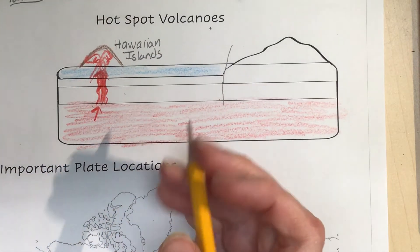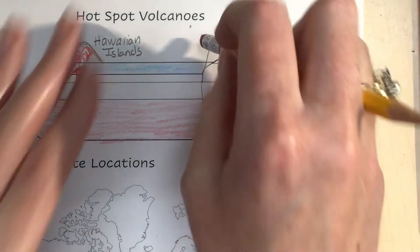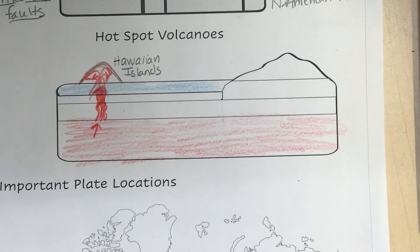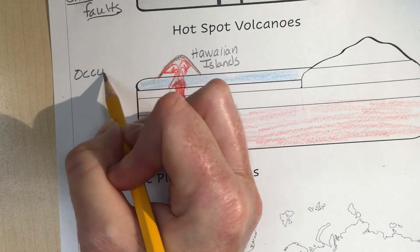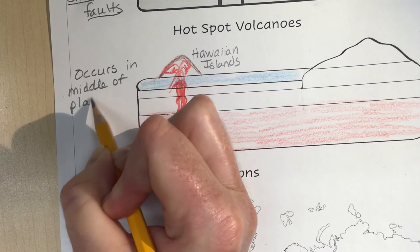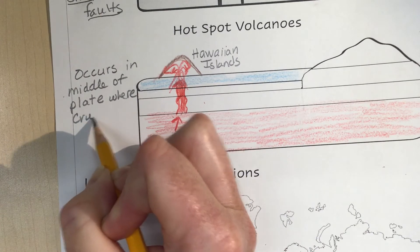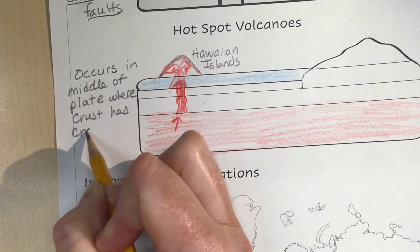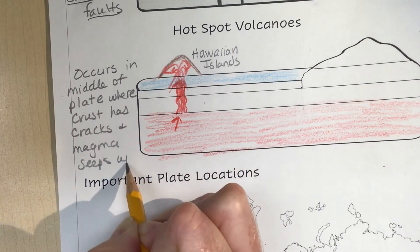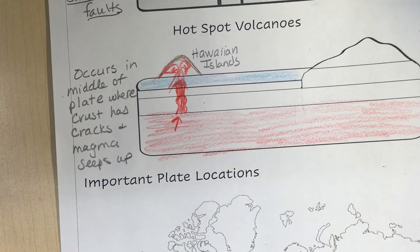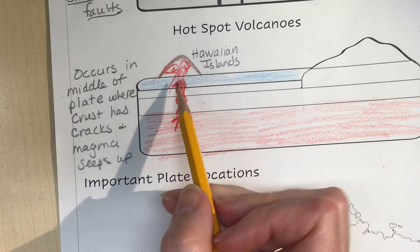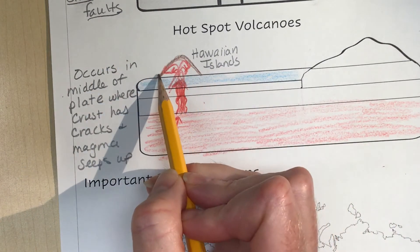The Hawaiian Islands are on the Pacific Plate in the middle of the plate — not on a plate boundary at all. This occurs in the middle of a plate where the crust has cracks and magma seeps up. The reason we have a chain of islands is that the plates continue to move, so the Pacific Plate keeps moving away from the hot spot.